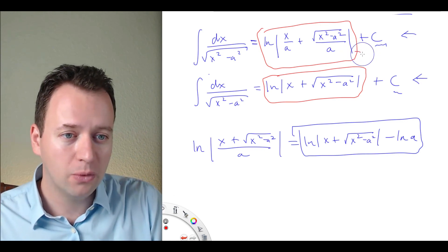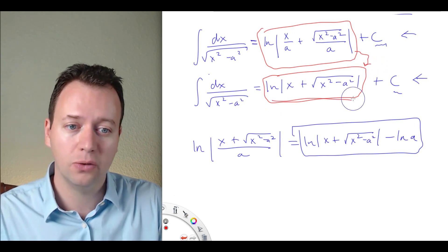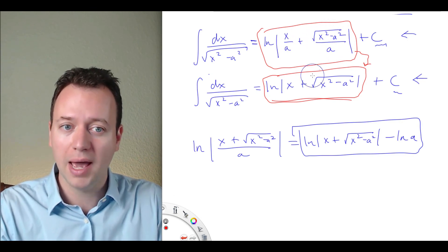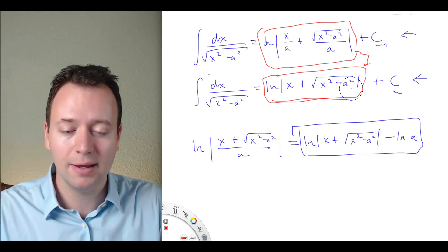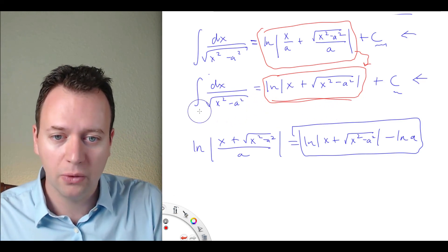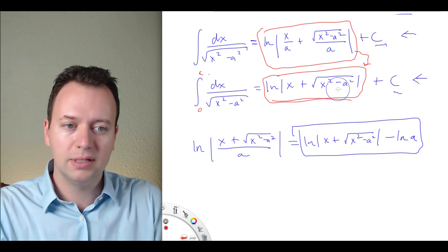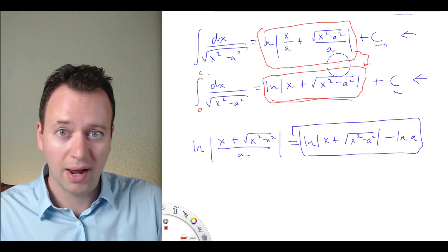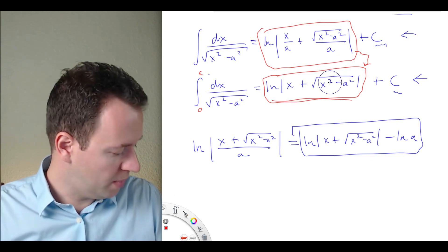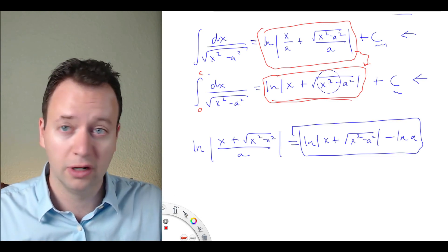In fact, you might prefer to just write the simpler form — ln of x plus the square root of x squared minus a squared — rather than the version with x over a and the square root over a. Especially if you have a definite integral, the simpler form is easier to compute. Anyway, those are two basic examples of trigonometric substitution.